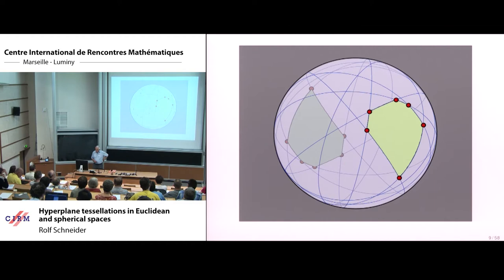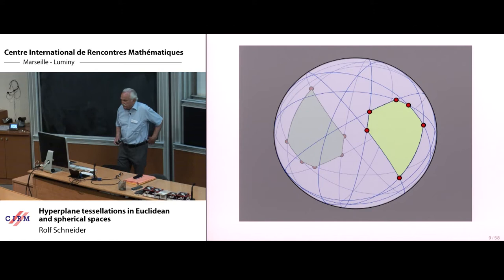And this last picture concerns tessellations of the sphere by great subspheres, or equivalently tessellations of space into cones by hyperplanes through the origin.